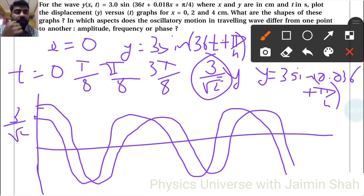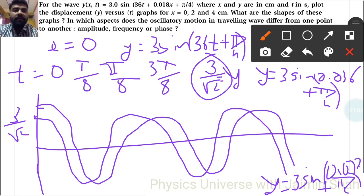And now third, when 0.036 times 2, that's 0.072. So our next y at 4 centimeters is 3sin(36t + 0.072 + π/4). Now again we have a higher value.